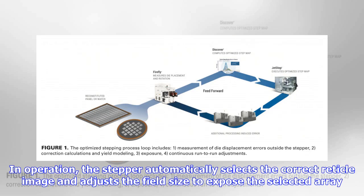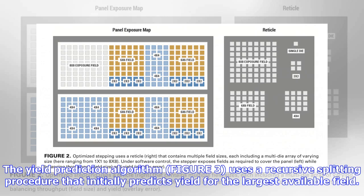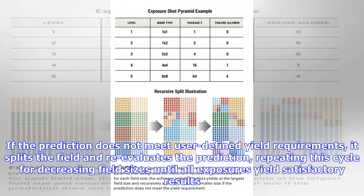In operation, the stepper automatically selects the correct reticle image and adjusts the field size to expose the selected array. The yield prediction algorithm, Figure 3, uses a recursive splitting procedure that initially predicts yield for the largest available field. If the prediction does not meet user-defined yield requirements, it splits the field and re-evaluates the prediction, repeating this cycle for decreasing field sizes until all exposures yield satisfactory results.